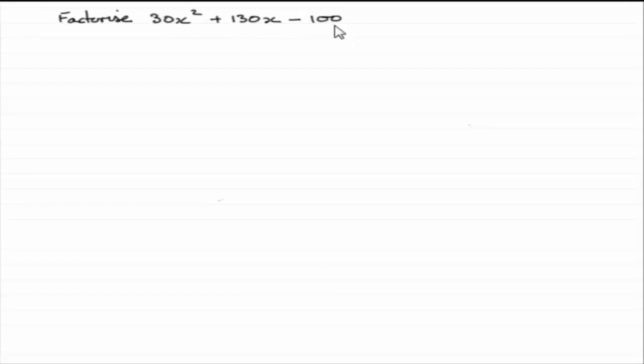So how do we factorise trinomials like this? Well, first of all, when you've got to factorise absolutely anything, the first thing I would always encourage you to do is check to see whether you've got a common factor. And in this example, you'll notice that 10 goes into each one of these three terms.